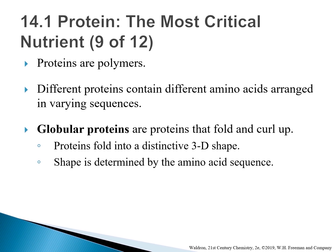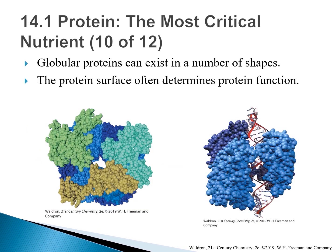Each globular protein folds into a distinctive three-dimensional shape dictated largely by its amino acid sequence. Globular proteins exist in a variety of shapes because it is often the protein surface that determines what the protein does. For instance, the contours of a protein often serve as a binding site for other molecules — as in ribonuclease 3, where a red molecule docks in the blue protein, which then cuts it into two pieces and releases it.